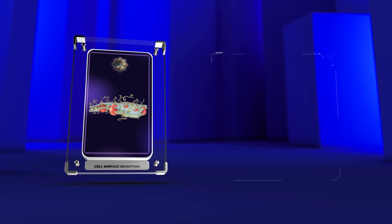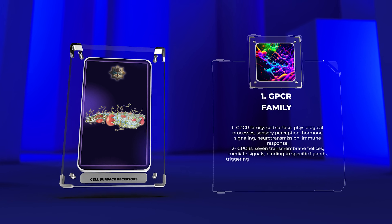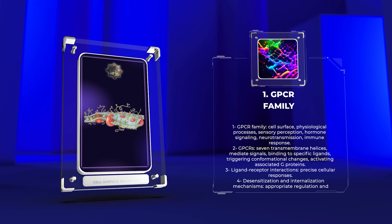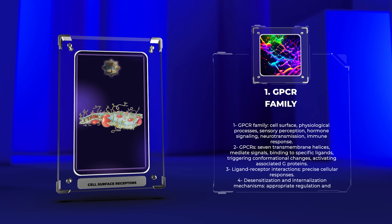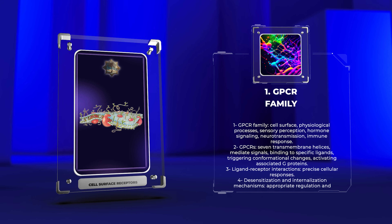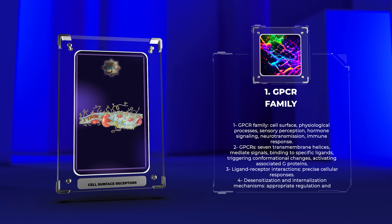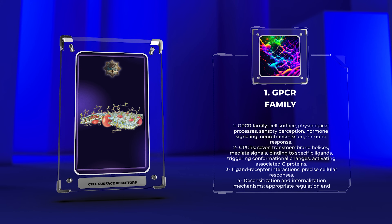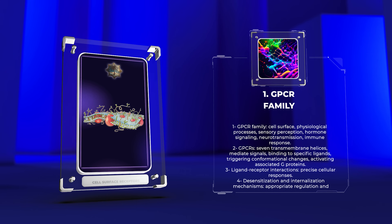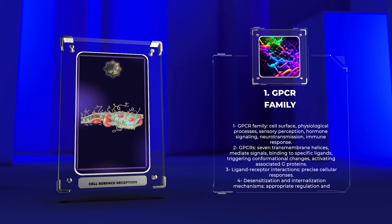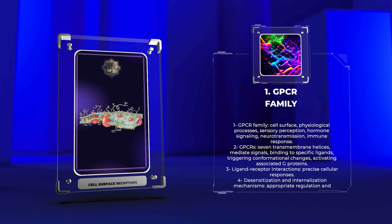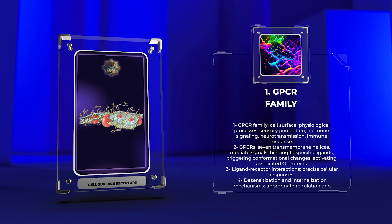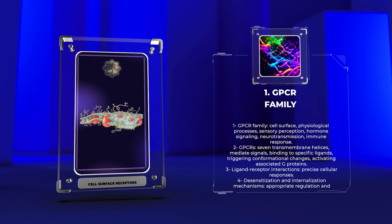The G-protein-coupled receptor (GPCR) family, found on the cell surface, plays a critical role in various physiological processes such as sensory perception, hormone signaling, neurotransmission, and immune response. GPCRs, with their seven transmembrane helices, mediate signals by binding to specific ligands, triggering conformational changes and activating associated G-proteins. This activation initiates intricate intracellular signaling pathways.